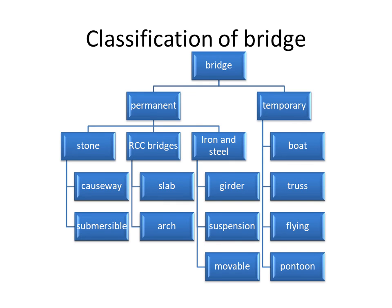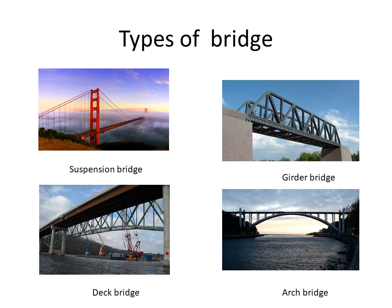Bridges are classified into two types: permanent bridges and temporary bridges. Permanent bridges are made up of stones, RCC, iron, and steel. Stone bridges include causeways and submersible bridges. RCC bridges include slab and arch types. Iron and steel bridges include girders and suspension and movable types. Temporary bridges are classified into boat type, truss, flying, and pontoon bridges. Examples shown include suspension bridge, girder bridge, deck bridge, and arch bridge.